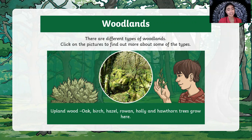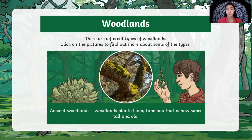The first one is oak woodlands. It has oak, birch, hazel, rowan, and all kinds of different trees that you can see in a woodland. Ancient woodlands — we have here woodlands planted long ago that are now super tall and old. Those are the ancient woodlands.